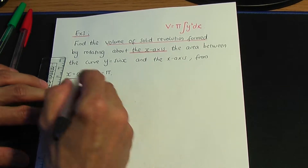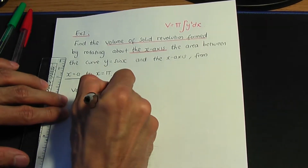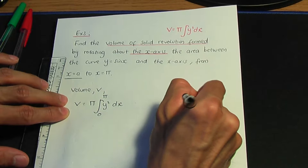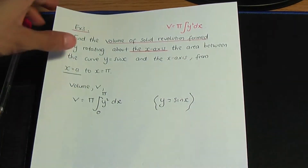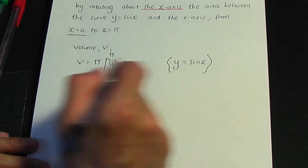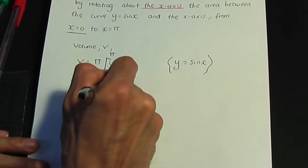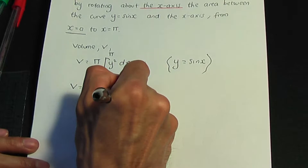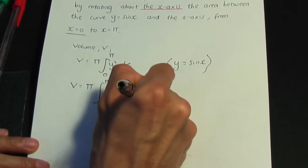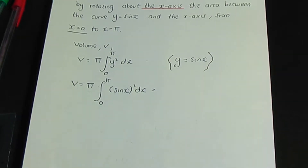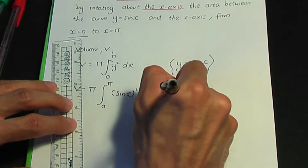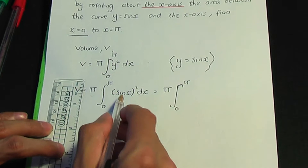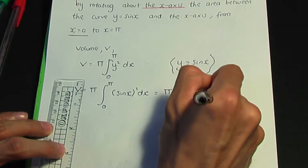The limits of our integral are zero, the lower limit, and pi, the upper limit. And y — the equation of our curve — is sine x. So if we replace y equals sine x, V therefore is pi into the integral between limits zero and pi of sine x squared with respect to x, which is the same as sine squared x.